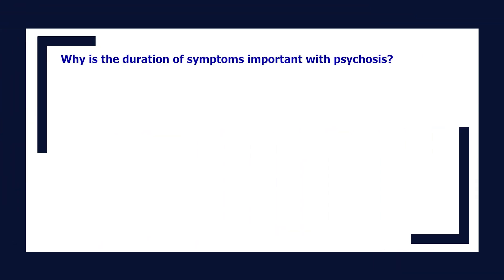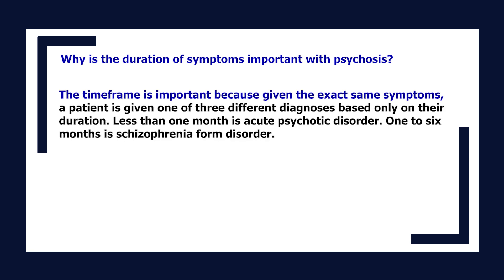Why is the duration of symptoms important with psychosis? The time frame is important because given the exact same symptoms, a patient is given one of three different diagnoses based only on their duration. Less than one month is acute psychotic disorder. One to six months is schizophreniform disorder.